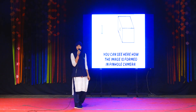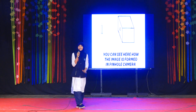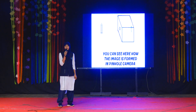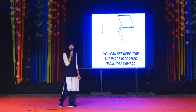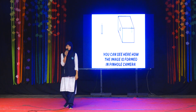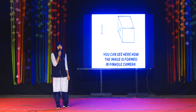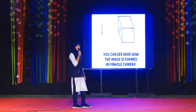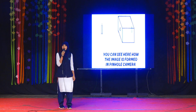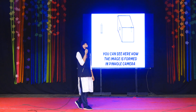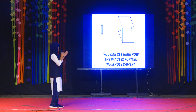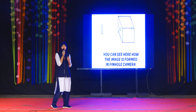A camera is the simplest kind of camera — it does not have any lens, it just makes use of a tiny opening. So I am talking about the pinhole camera. A simple pinhole camera is a box with a tiny hole through which light enters to form an image. You can see in this image how the pinhole camera is formed.